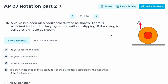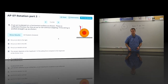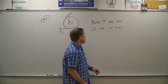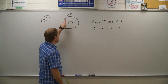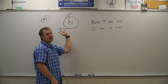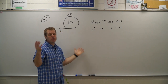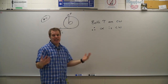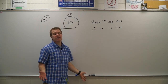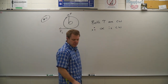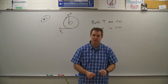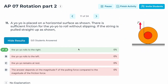Number eleven: the yo-yo is placed on the same surface but now we pull up on the string. When we pull up on the string, we end up with two clockwise torques. Since both torques are clockwise, the angular acceleration is definitely clockwise. Correct answer: A.